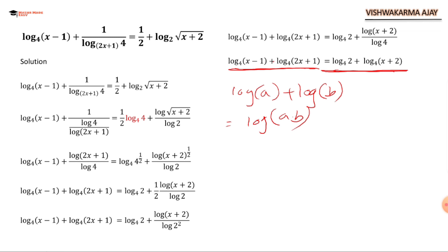If there was minus, it could be a/b. So as I said, we take log common: (x - 1)(2x + 1) times (x + 2) here.